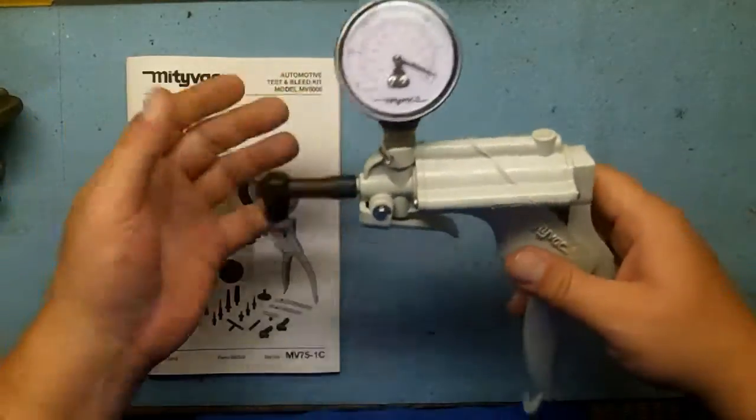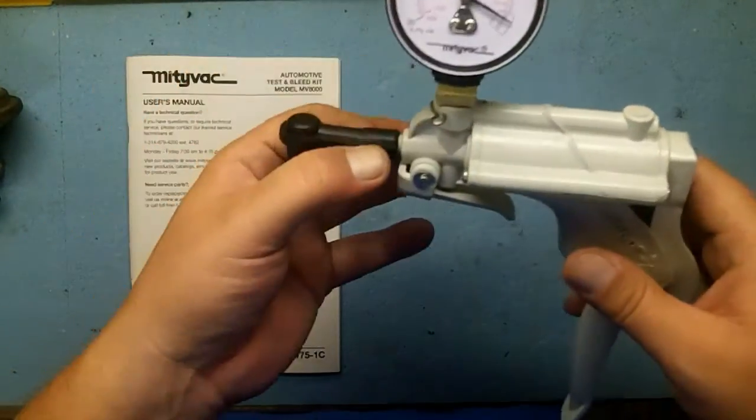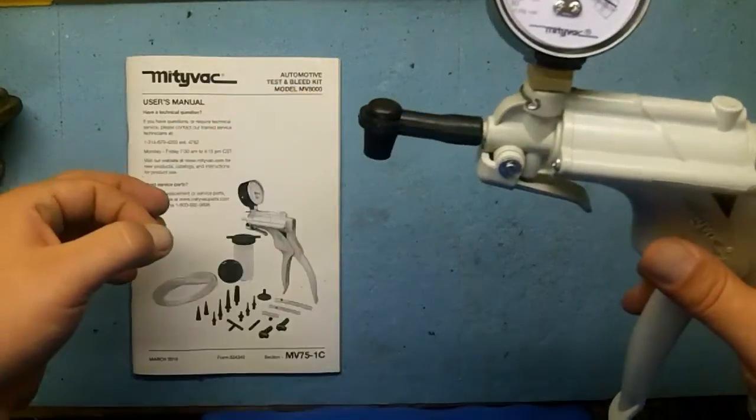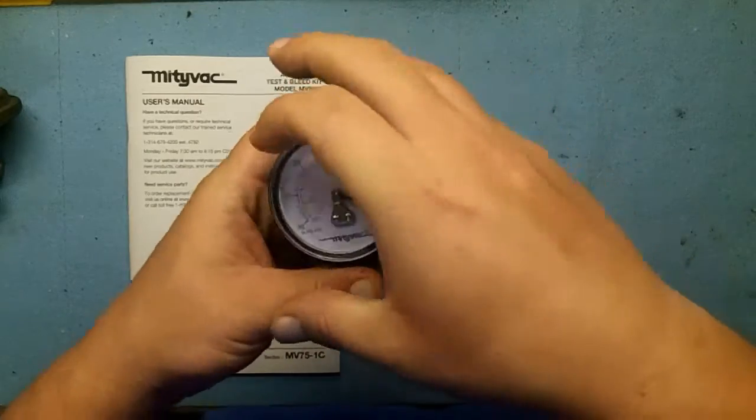If you want to read manifold vacuum or any vacuum source, you just attach a long vacuum line to your engine and completely ignore this gun part. Now you have your vacuum gauge.